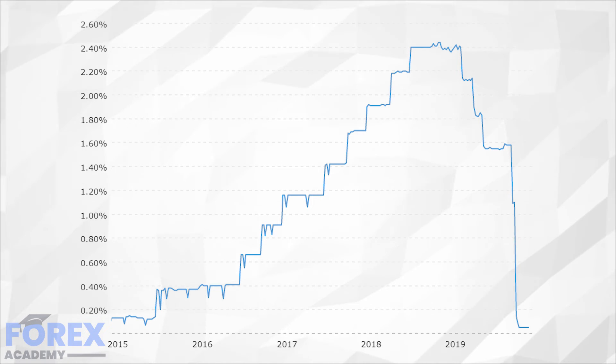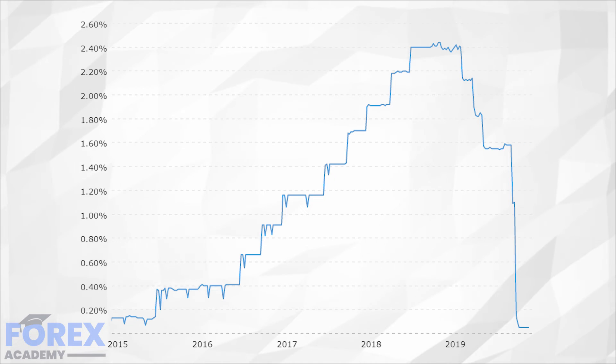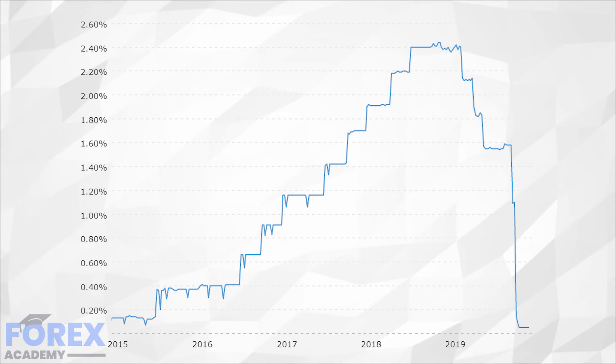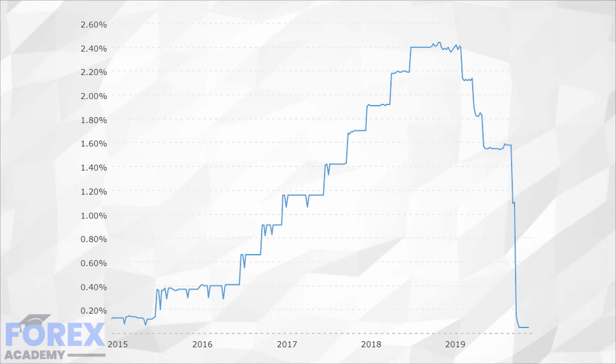A negative interest rate is used when the central bank has to boost a weakening economy. When the economy is weak, people as well as businesses keep their cash and save up instead of spending it. A negative interest rate is used to encourage spending money, as keeping it in the bank will make you lose it anyways.